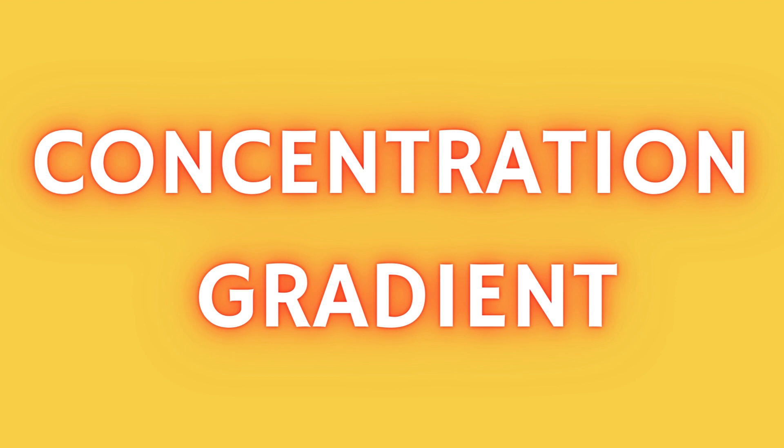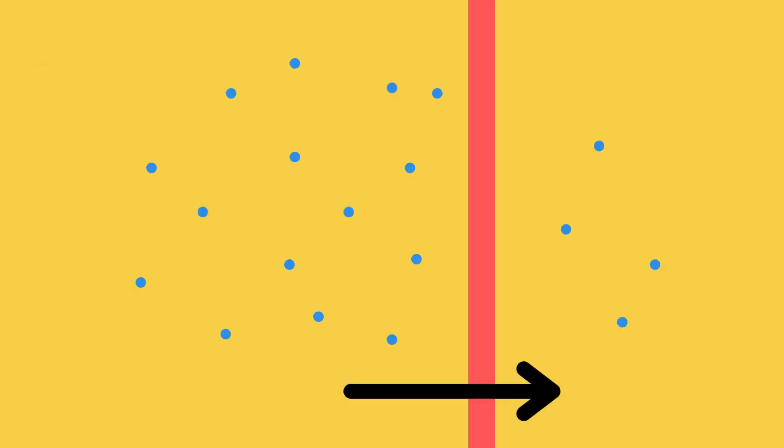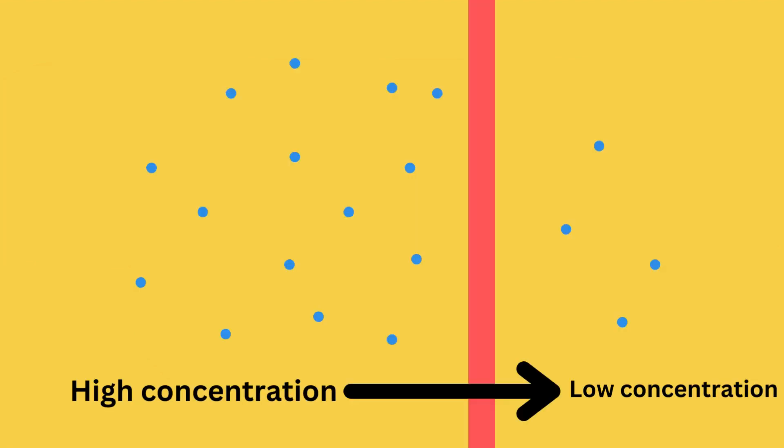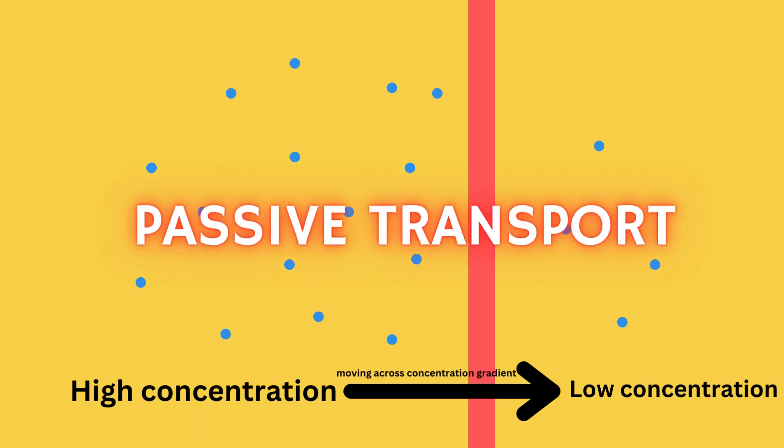The movement of molecules across membranes also depends on the concentration gradient, in which molecules will move from a high concentration to a low concentration. When molecules move across their concentration gradient, it is called passive transport, which is a way many molecules are imported and waste within a cell is exported.